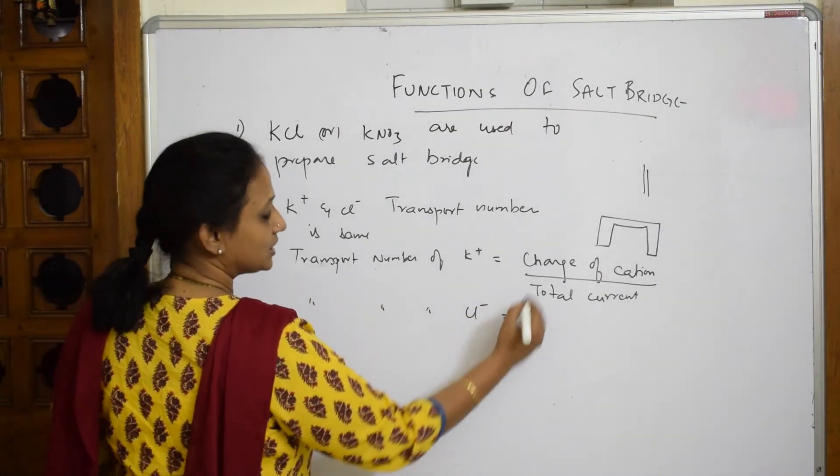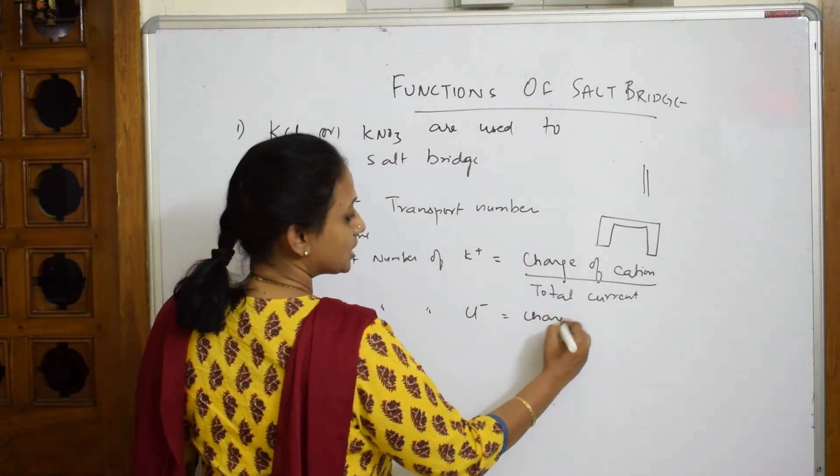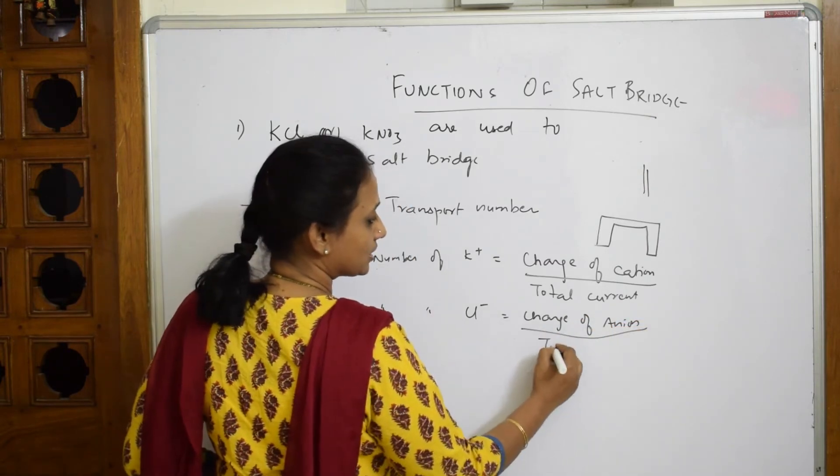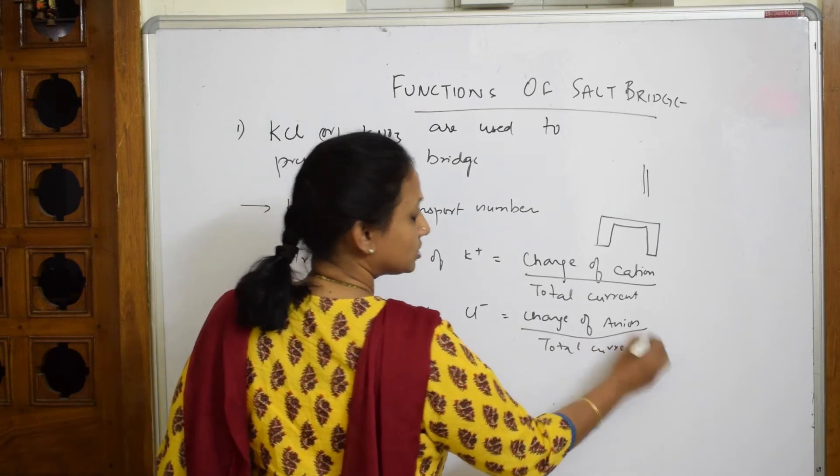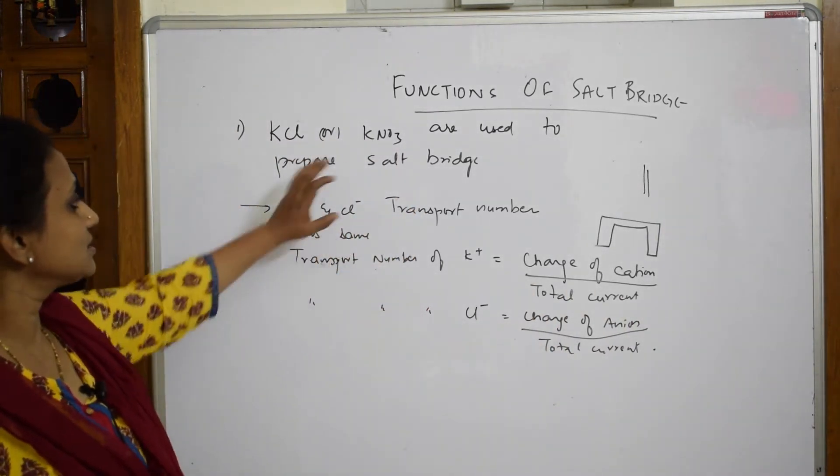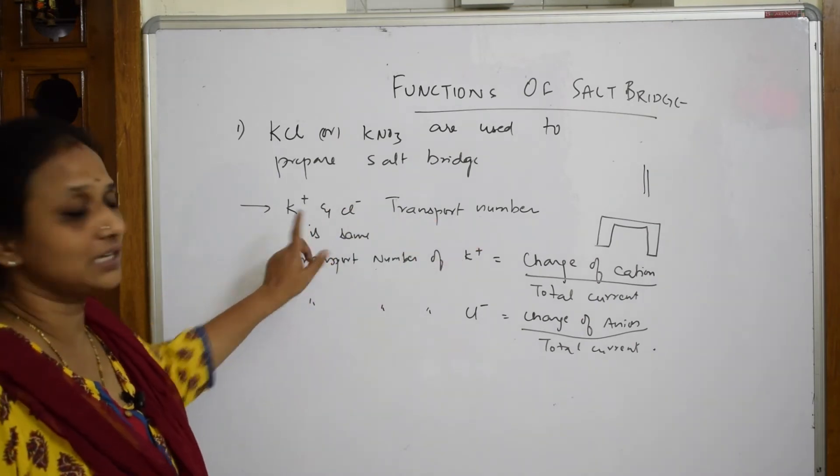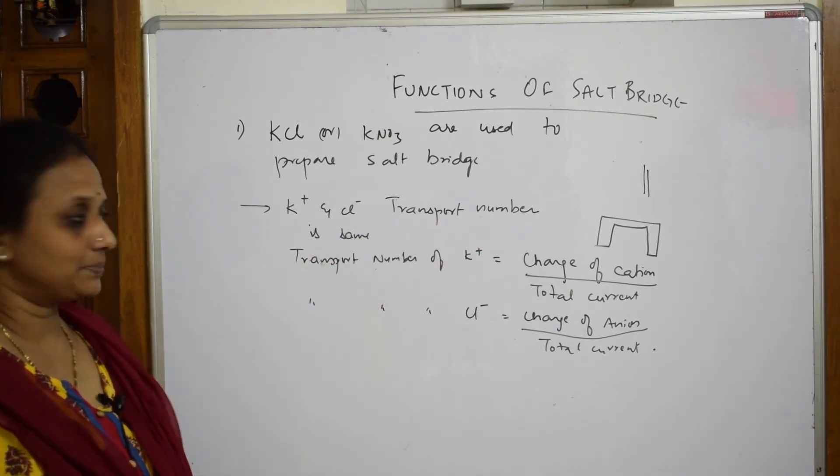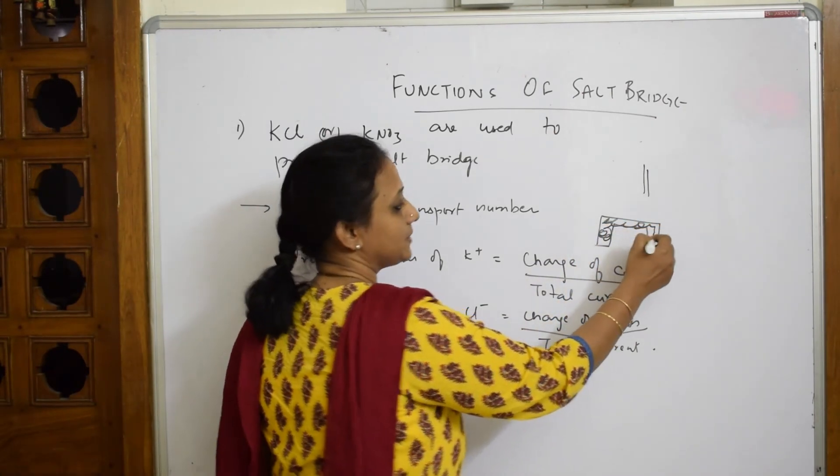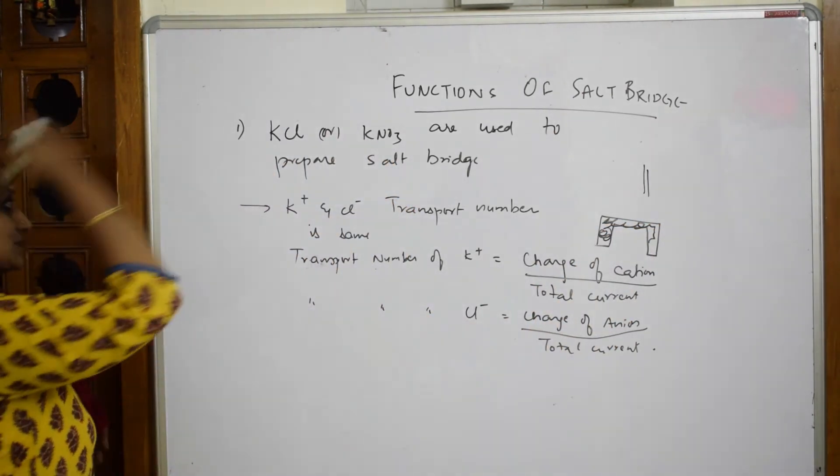Now when this was calculated, both the cation as well as anion, the transport numbers were same. So that's the reason the salt bridge is filled with KCl - in that the whole thing is filled with KCl, incorporated with KCl or KNO3.